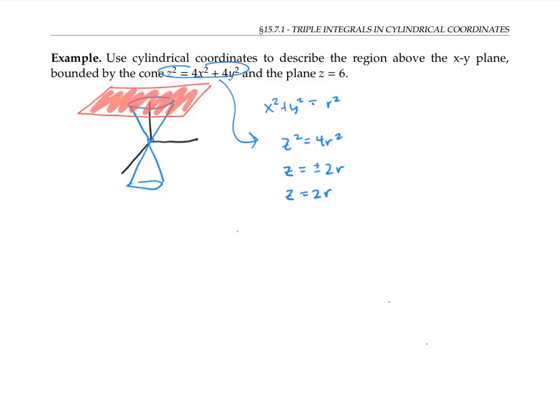Now to describe the inside of this region, I find it handy to start with bounds for the z values in terms of the other variables, and then worry about the r and theta value bounds. Z can get as small as it is when it touches this cone and as big as when it touches the plane.